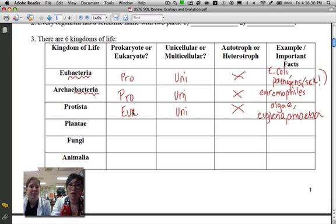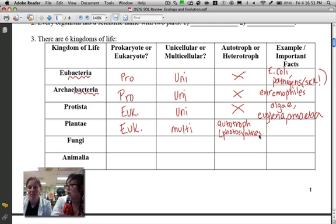Our next kingdom of life is plantae, also known as plants, and they're not bacteria so they have to have a nucleus, so they're eukaryotes. These guys you can see without the aid of a microscope, so they're multicellular. And plants, by definition, make their own food, so they're autotrophic because they are photosynthesizers. An example: there are just a ton, right? Any type of flowering plant, so we can say a rose, a tree, grass, any of those things work.